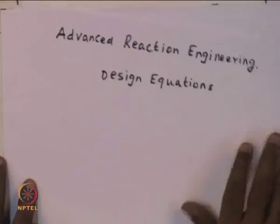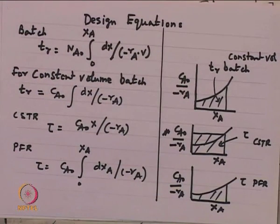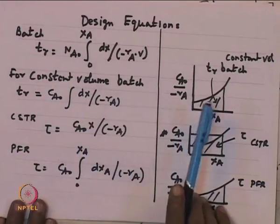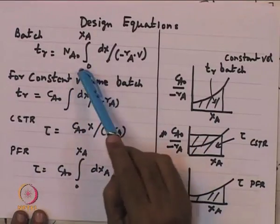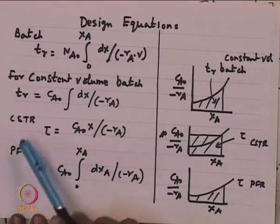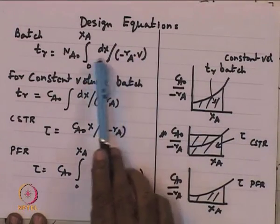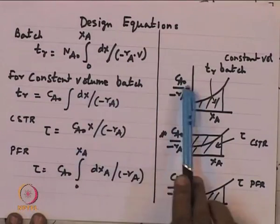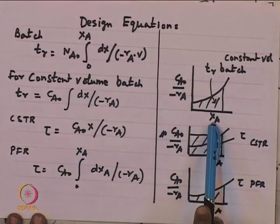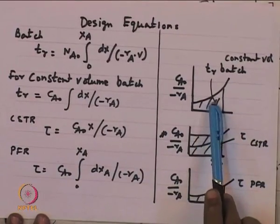We are looking at advanced reaction engineering design equations. We have talked about design equations and derived them for various situations. For a batch reactor, the reaction time is the integral from 0 to X_A of dX_A divided by (-r_A times V). For a constant volume batch, V can be taken out of the integral, so this becomes C_A0 divided by (-r_A). Plotting C_A0/(-r_A) versus X_A, the area under the curve from 0 to X_A gives the reaction time.